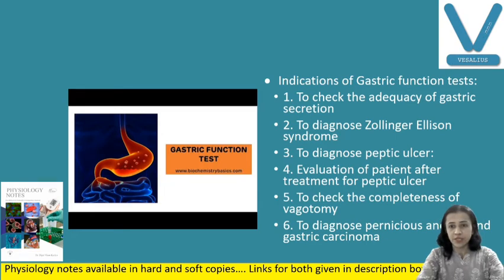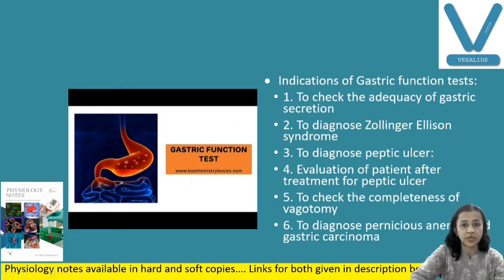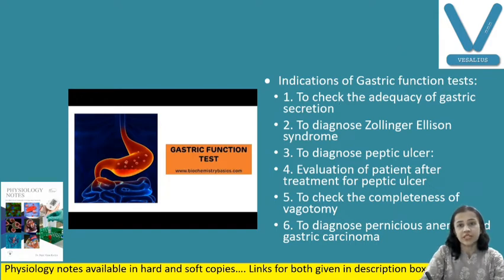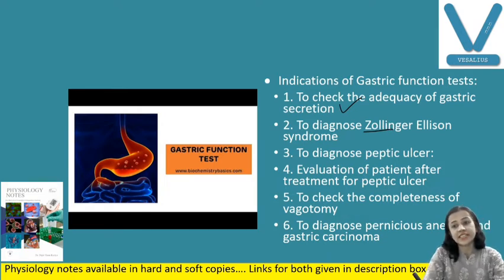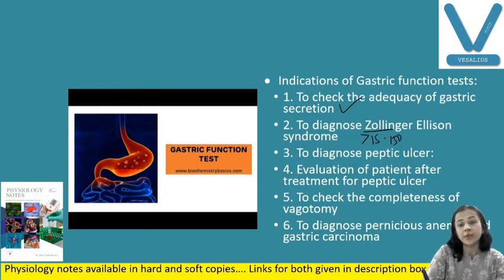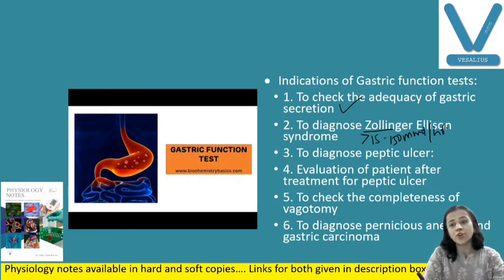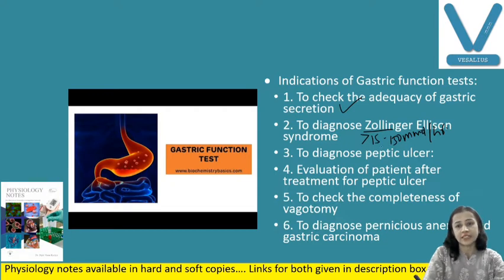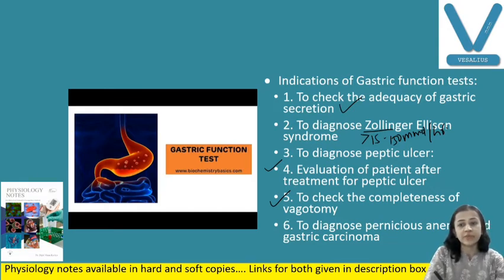This topic may be asked in practical as well as theory. Starting with the indications for gastric function test: it is required to check the adequacy of gastric secretion, whether our gastric secretion is adequate or not. It is used to diagnose Zollinger-Ellison syndrome, where a gastrin-secreting tumour secretes HCL, and basal acid output increases more than 15 to 150 millimoles per hour. It is also used to diagnose peptic ulcer, in which basal acid output, maximum acid output, and peak acid output are all increased. It is used for evaluation of the patient after treatment for peptic ulcer, to check the completeness of vagotomy, and also to diagnose pernicious anemia and gastric carcinoma.